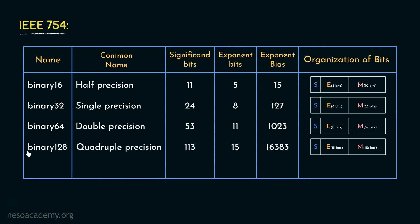The next standard is Binary 128, where 128 bits are used, commonly known as quadruple precision. It specifies 113 bits for significant and 15 bits for exponent, with an exponent bias of 16,383. The organization of bits is: the MSB is the sign bit, followed by 15 bits dedicated for the exponent, and finally 112 bits dedicated for the mantissa.